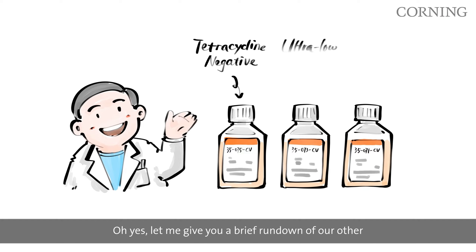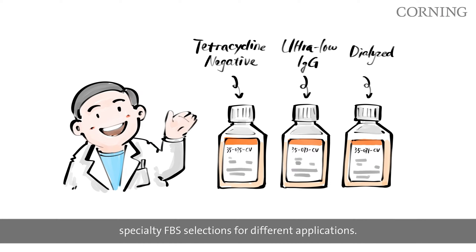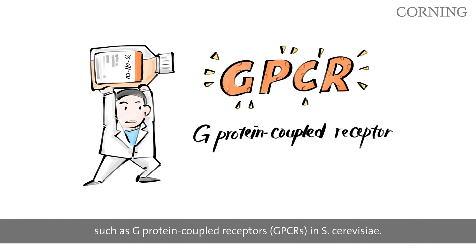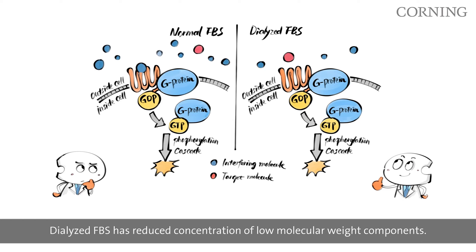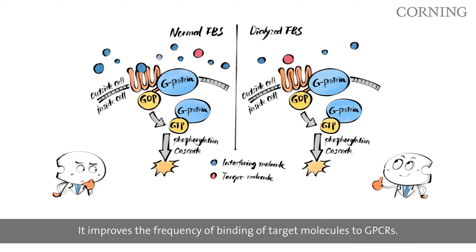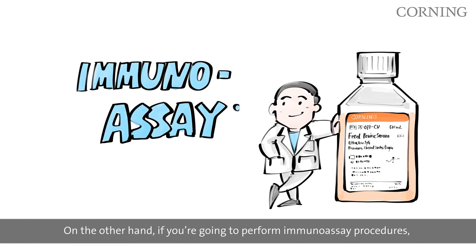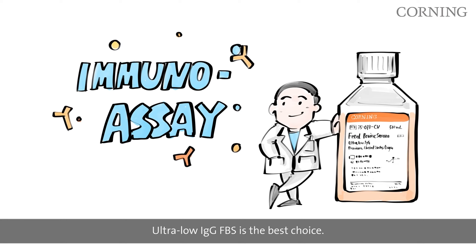Let me give you a brief rundown of our other specialty FBS selections for different applications. Dialyzed FBS is commonly used in receptor studies, such as G-protein coupled receptors in S. cerevisiae. Dialyzed FBS has a reduced concentration of low molecular weight components, which improves the frequency of binding of target molecules to GPCRs.